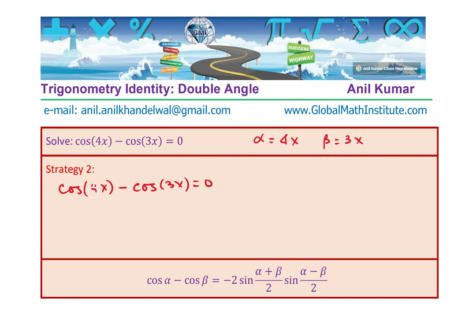The left hand side minus 2 times sine alpha plus beta by 2 means 4x plus 3x by 2 times sine difference of these divided by 2. This is called sum to product or difference to product formula. This is a very important formula. Make a note of this, which is called sum to product or difference to product.